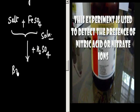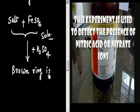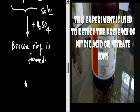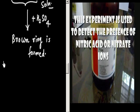A brown ring is formed, and that is why this test is called the brown ring test. Now, what are the reactions involved? Let us write the reactions involved.